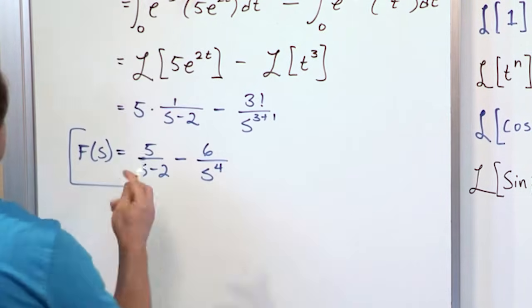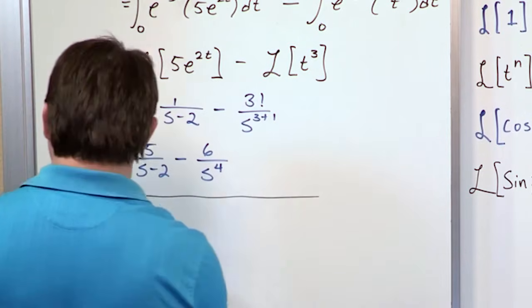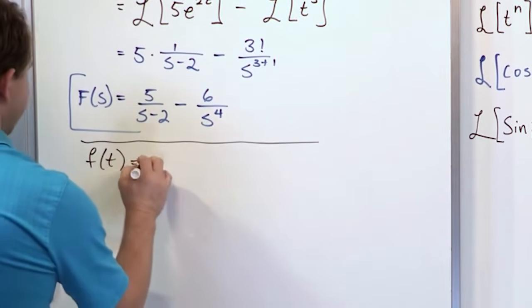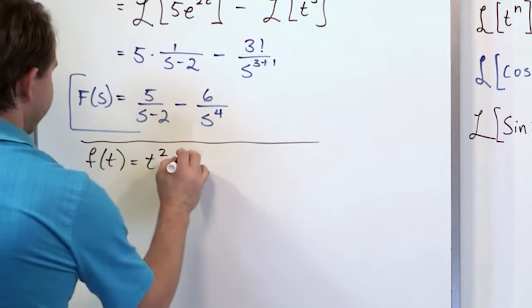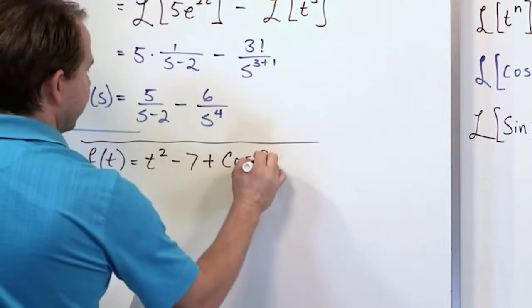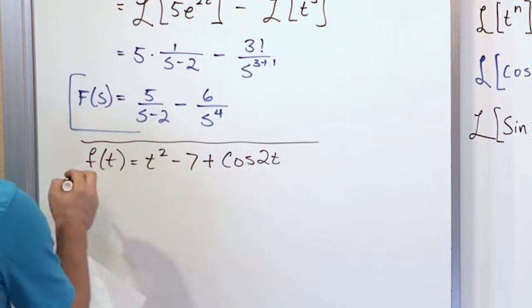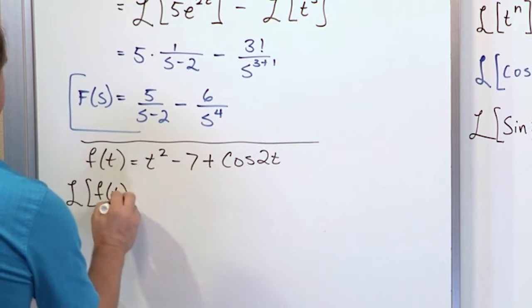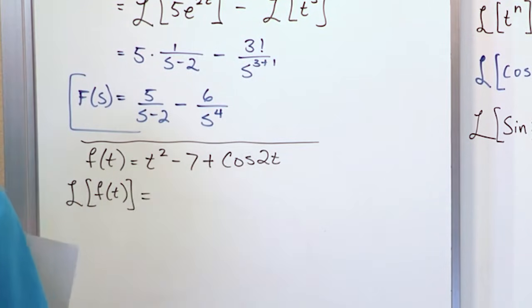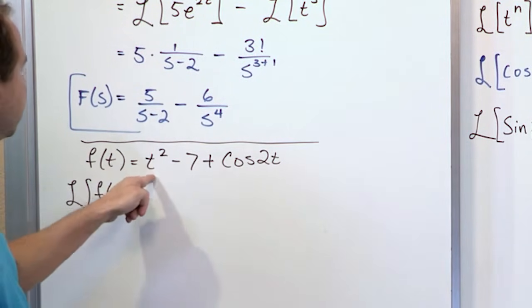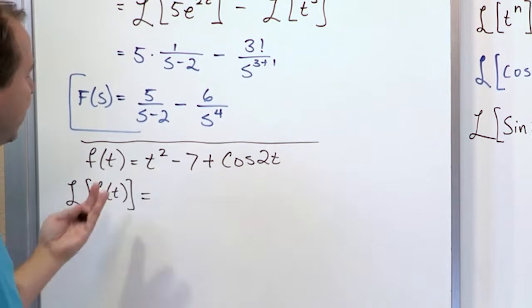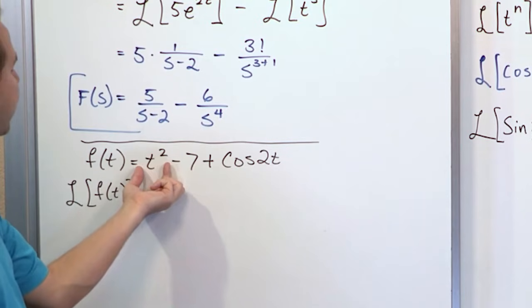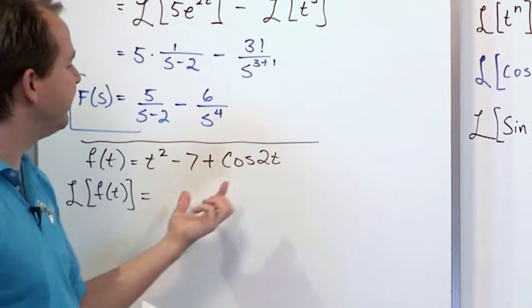So I get 5 over s minus 2 minus 6 over s to the fourth. This is f capital of s because it's a pure function of s. So notice that what's happening every time we transform these guys is I go from a function of t to a pure function of s. It gets confusing whenever you first learn about the transform because you see betas and lambdas and stuff running around. But those are just constants. Those are locked down by your problem. You should end up with a pure function of s. That's what the Laplace transform is.